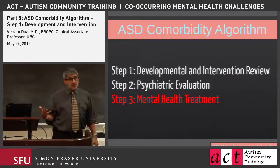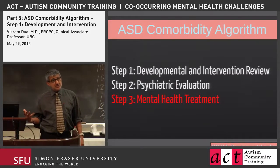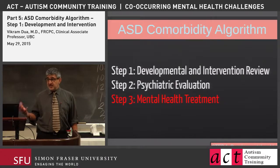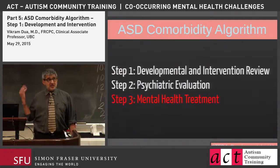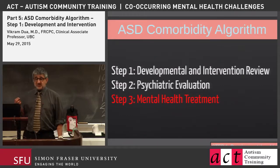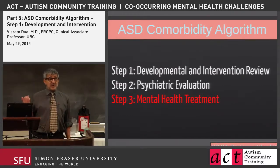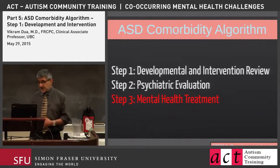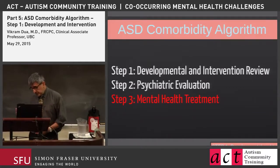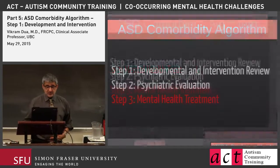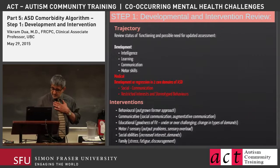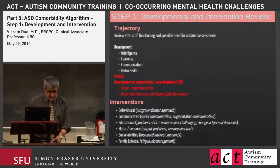What I'm going to take you into now is the approach I've developed over the last 15 to 20 years, which I coined the autism comorbidity algorithm. It's really nothing fancy other than a stepwise approach to breaking down development, psychiatric evaluation, and treatment. I'm going to go through this in a number of ways, using some cases to help illustrate the approach.